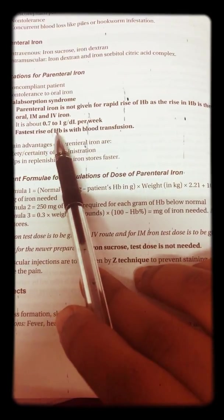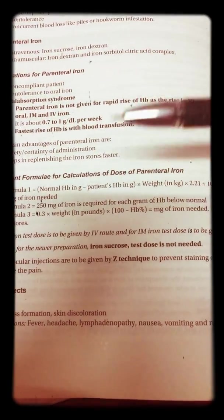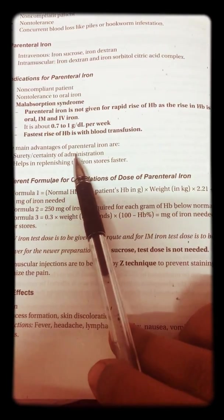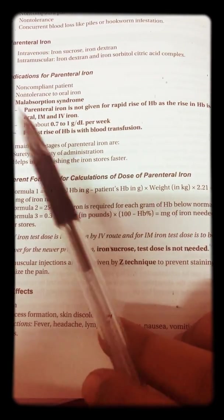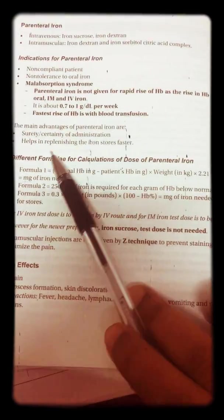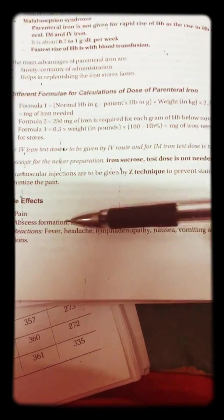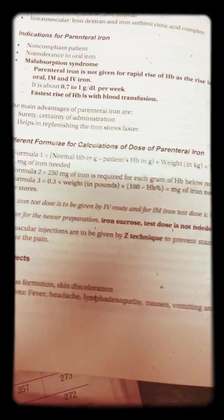Parenteral iron is not given for rapid rise of hemoglobin, as hemoglobin rise with oral, IM, and IV is about 0.7 to 1 gram per deciliter per week. Fastest rise in hemoglobin is with blood transfusion. The main advantages of parenteral iron are surety of administration and help to replenish iron stores. Side effects include pain, abscess formation, and reactions like fever, headache, lymphadenopathy, nausea, vomiting, and rarely allergic reactions.